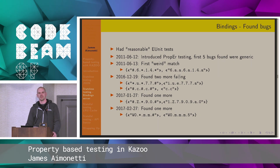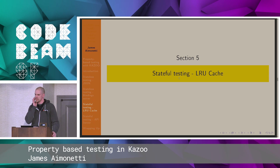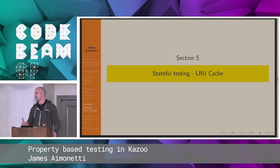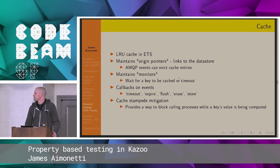So those are two examples within Kazoo of stateless testing that are fun. But I think the real value in property testing comes when you start working on stateful testing. This is more like what Fred talked about earlier — if you can't create a model of what you're doing, you can't really expect the operators of your system to know what to do. We have a simple LRU cache that we use for caching some database operations, and we've added some things like monitors.